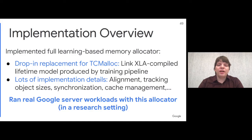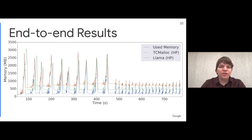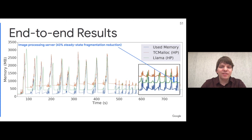With this allocator, we can now take entire C++ Google servers and actually run them in a research setting. This is purely a research experiment, not a production deployment. Here's a trace from an image processing server responsible for resizing images and applying filters. We run the server against a synthetic trace of input images of different sizes causing memory footprint to change. Compared to a non-huge page-aware TCMalloc baseline, we reduced fragmentation in steady state by 43%. We also ran similar experiments with three other servers and observed fragmentation reductions in steady state by 19% to 78%.